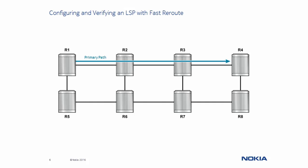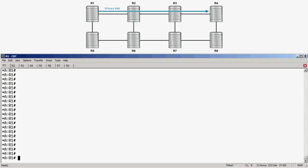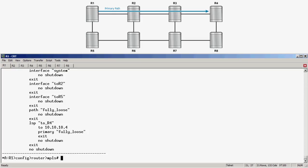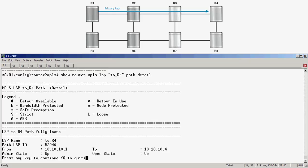Now, let's go to our lab environment and configure an LSP with Fast Reroute and verify its correct operation. Here we are in our lab environment. To look at the configuration of the LSP on R1, we can do a 'configure router MPLS', enter, followed by the info command. Here we can see the LSP is named 2_R4, and it is a simple LSP with a tailend of 10.10.1.4 and a primary path called fully_loose. As the name implies, it is fully loose because there are no explicit hops specified. Let's take a look at the status of the LSP by running 'show router MPLS LSP 2_R4 path detail', and from the output, we can see that the administrative state and operational state is up.